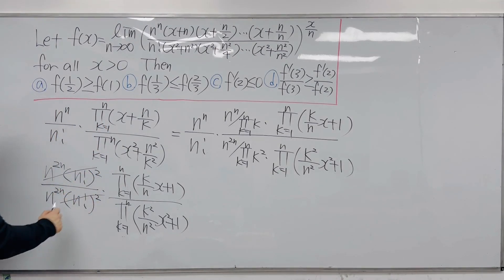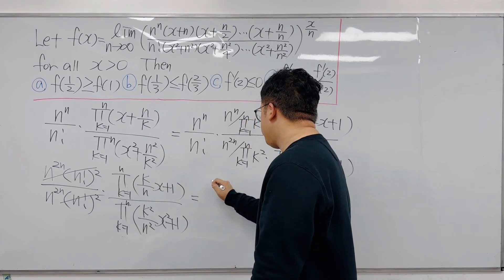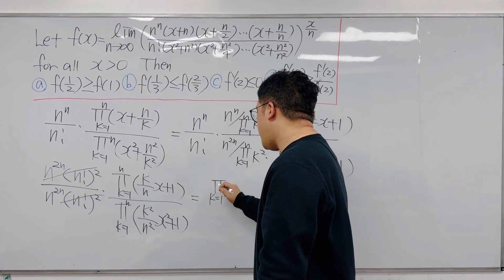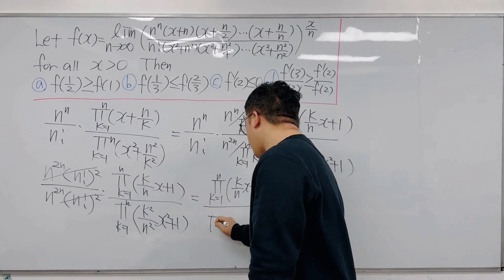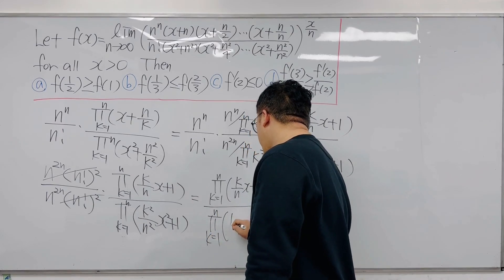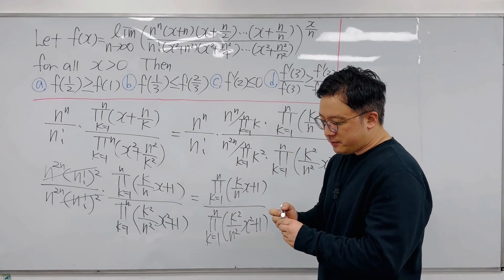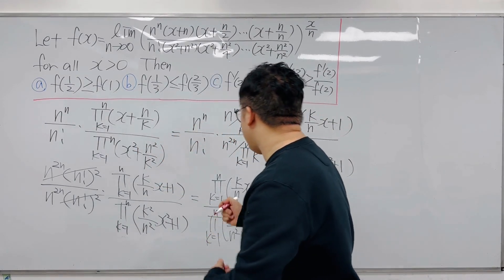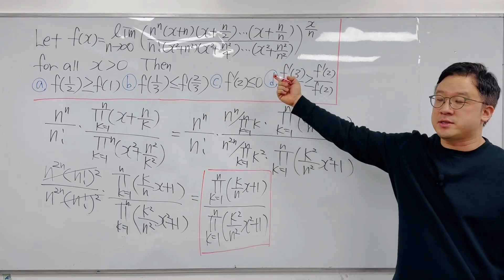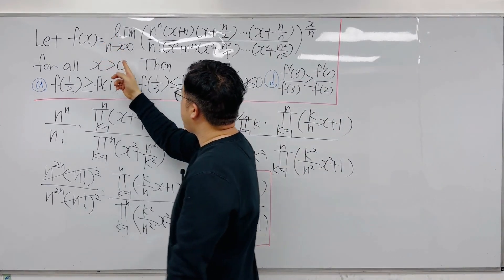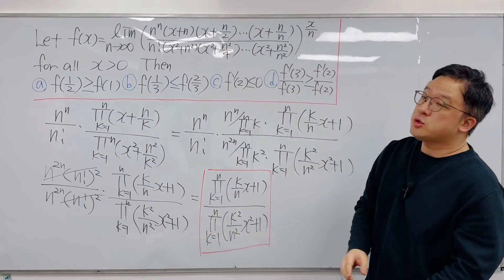We can conveniently factor these out. What we have remaining inside the parenthesis is the product from k = 1 to n of (k/n · x + 1) divided by the product from k = 1 to n of (k²/n² · x² + 1). So f of x is the limit as n goes to infinity of this expression, raised to the power of x over n.